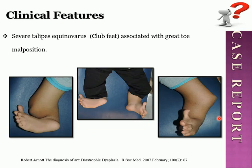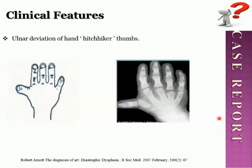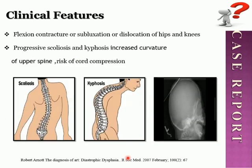Another common feature seen in these patients is severe talipes equinovarus, also called club feet, associated with great toe malposition. They also have ulnar deviation of the hand, known as the Hitchhiker thumb. As you can see in this picture, there is clear ulnar deviation of the thumb. Additionally, there are skeletal malformations including flexion contracture, subluxation, and dislocation of the hip and knee.